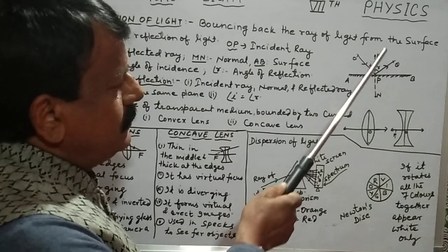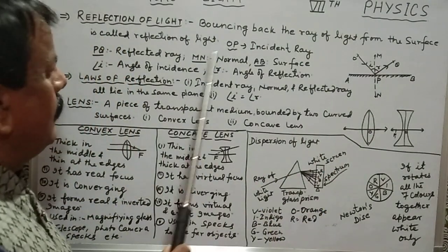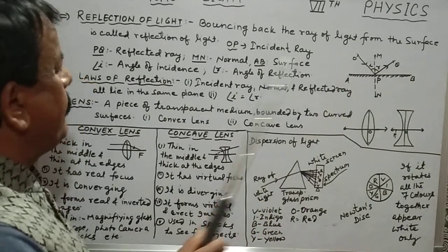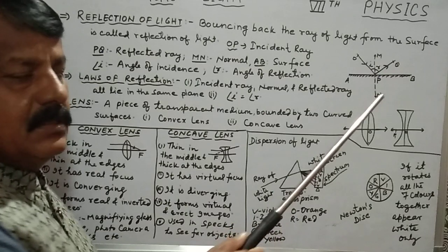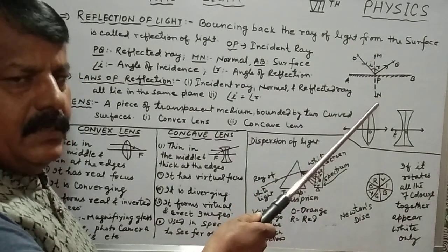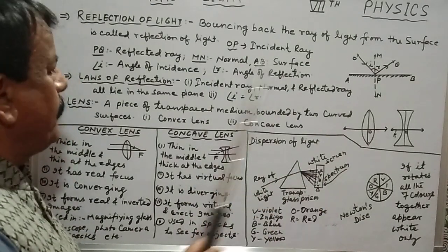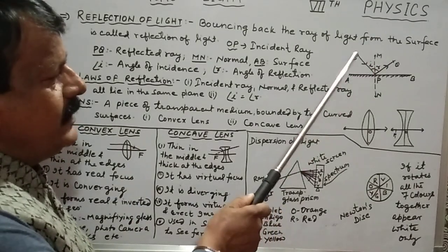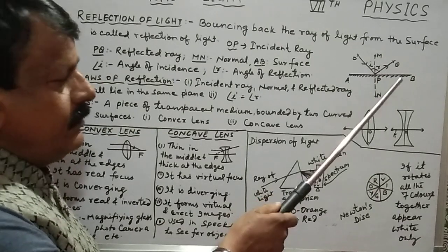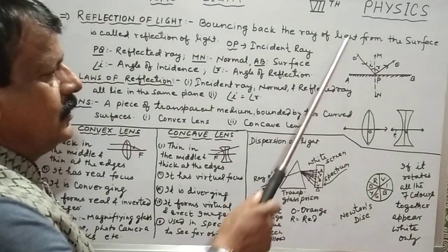In between there is a normal perpendicular line. AB is the surface. OP is the incident ray — the ray which is falling on the surface. PQ is the bouncing ray, that is called the reflected ray. MN is the perpendicular line at the point of incidence, point P. AB is the surface. Angle I is the angle formed between the incident ray and the normal — that is the angle of incidence. Angle R is the angle formed between the normal and the reflected ray — that is the angle of reflection.